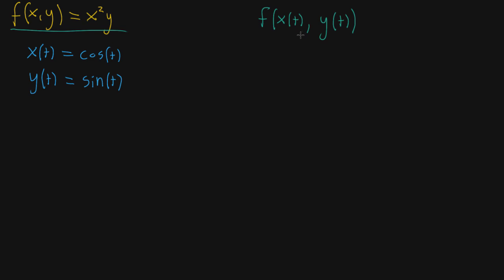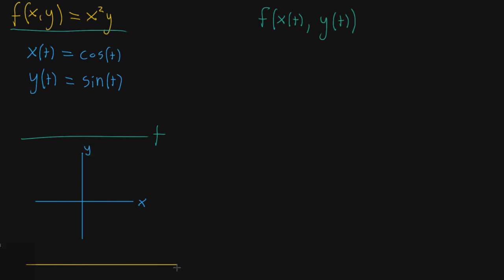The image you might have in your head for something like this: you can think of t as just living on a number line of some kind. Then you have x and y, which is just a plane — your x coordinate, your y coordinate, two-dimensional space. Then you have your output, which is whatever the value of f is. For this whole composition of functions, you're thinking of x(t) and y(t) as taking a single point in t and moving it over to two-dimensional space somewhere, and then our multivariable function takes that back down. So this is just a single-variable function.